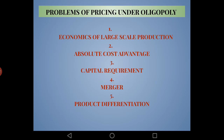The next topic is problems of pricing under oligopoly. The first point is economies of large-scale production. When a firm produces on a large scale, it can purchase raw materials in bulk and produce in bulk, which decreases the cost of production. When the market is small with only few sellers, firms can get all the benefits of economies of large-scale production and earn more profit.